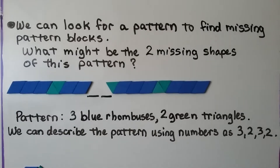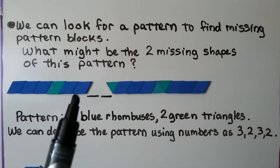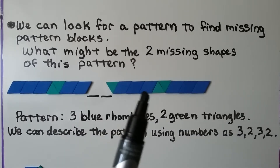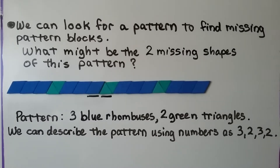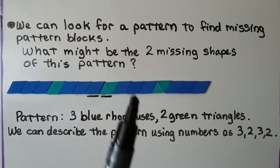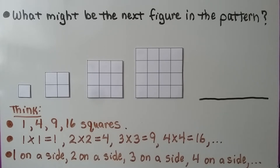We can look for a pattern to find missing pattern blocks. We see three blue rhombuses, then two green triangles, then only two blue rhombuses and one triangle — but the full pattern is three blue rhombuses and two green triangles. A blue rhombus and a green triangle are missing. We can describe this pattern using numbers: 3, 2, 3, 2, 3, 2 — it keeps repeating.